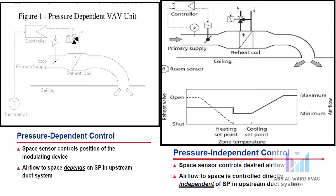A pressure dependent VAV control scheme uses the space temperature sensor to directly control the position of the modulating device. The actual airflow delivered to the space is a byproduct of that position and depends on the duct system static pressure at the inlet of the terminal unit.